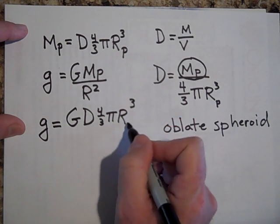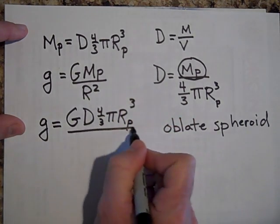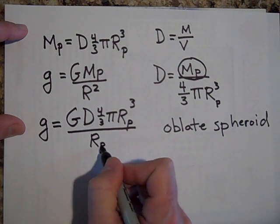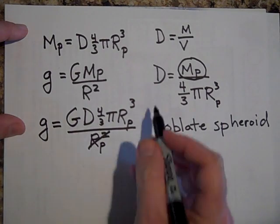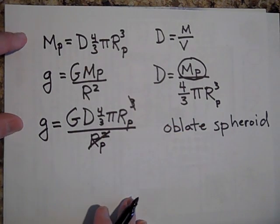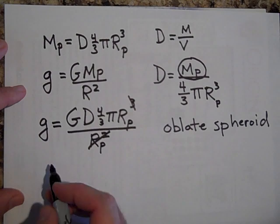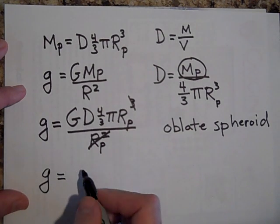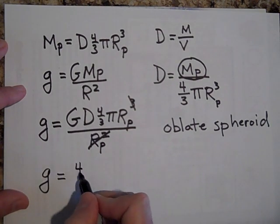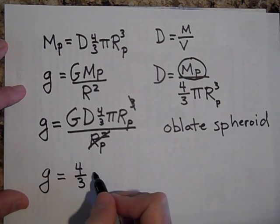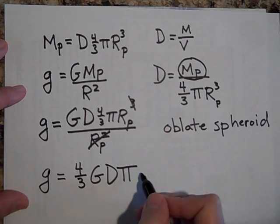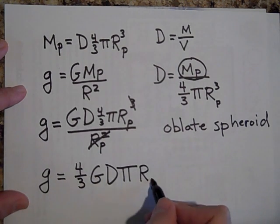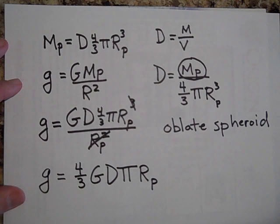So we can get rid of this term and the cube. And we're left with g of a planet is equal to, I'm going to bring the four thirds in front, four thirds G D pi times the radius of the planet.